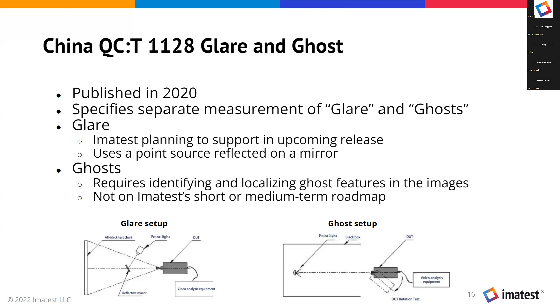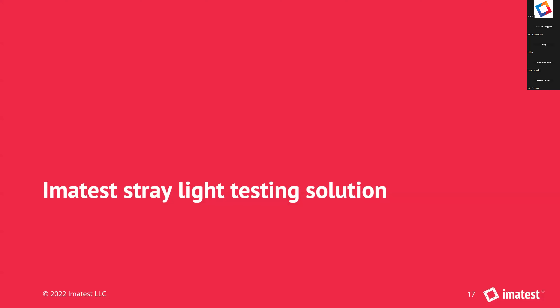Now I want to talk about the Imitest stray light testing solution — our hardware and software. To test for stray light, in terms of equipment, all you really need are three things: a dark or black room, a bright light source, and a way to rotate your camera under test or alternatively move the light source around your camera. 在测试的设备上面，我们只需要三个东西：一个暗房里面，第二个就是很亮的可控的光源，第三个就是要有非常精确可调的相机，或者是可调的光源。